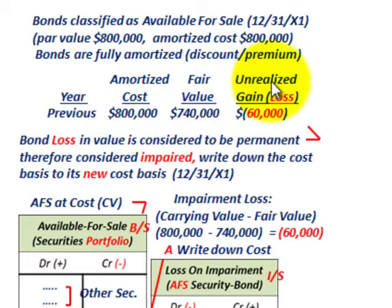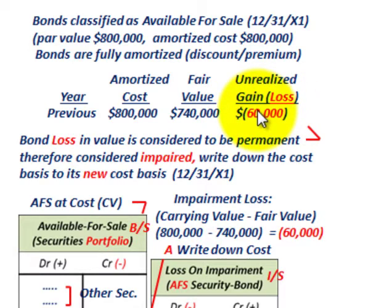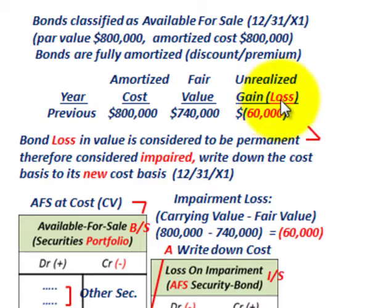In the previous year, we recognized an unrealized loss of $60,000, which is sitting in shareholders' equity as part of other comprehensive income — it hasn't gone into the income statement. Now this bond loss in value is considered to be permanent, so this unrealized loss is considered an impairment. When a loss is considered impaired, you have to write down the cost basis to the new cost basis.